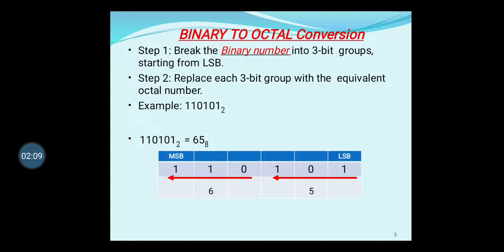After grouping these 3-bit groups, the next step is to represent each 3-bit group into its equivalent octal number. Here, 101 in binary has an equivalent octal number of 5. And 110 has an equivalent octal number of 6. So that gives us 65. Therefore, the binary number 110101 has an equivalent octal number of 65.